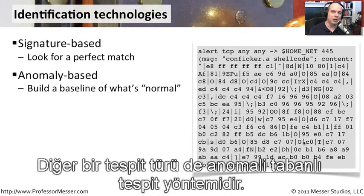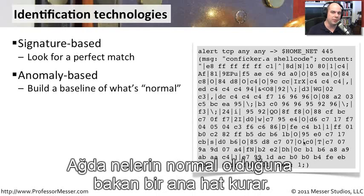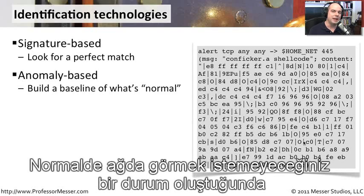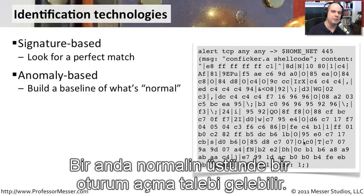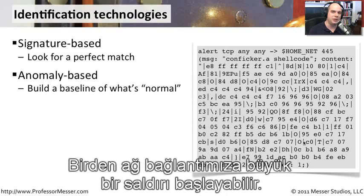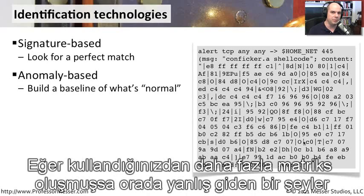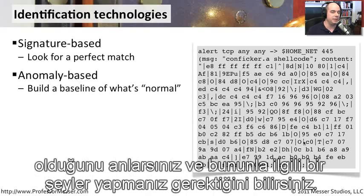Another type of detection is called anomaly-based detection. A probe or device on the network observes what is normal and builds a baseline. If certain metrics go well above that normal range, it becomes an anomaly — something you wouldn't normally see. It might trigger an alarm, such as when suddenly many more people than normal try to log in, or when there are huge bandwidth spikes well beyond what's typical. This gives the security professional more metrics to understand whether something is wrong.